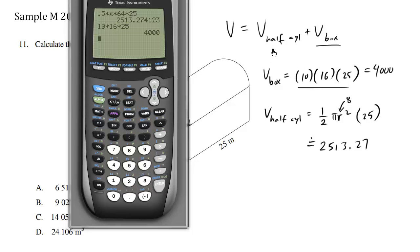So we have the volume of the box, 4,000, and we have the volume of the half cylinder, which is this number here. And we simply add them together. So I'm going to take this answer, 4,000, and I'm going to go plus. Let me find this answer here. Press enter. And we have the final volume. So the volume is equal to 6513.3 approximately.